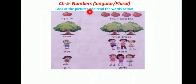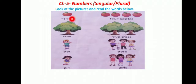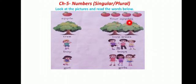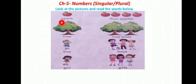Look at the pictures and read the words below. One side is singular and the other side is plural. Singular means only one thing, and more than one is called plural. Here, one apple is there, so you write 'apple' because it's only one — that is singular. But in front of that, there are four apples, so it is called plural. You have to write 'apples' — that is the plural form.